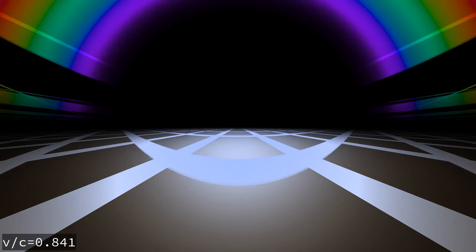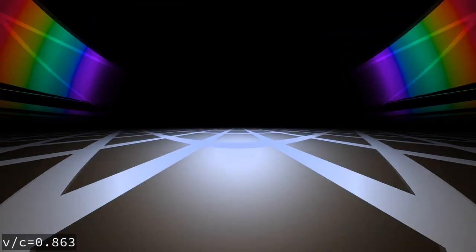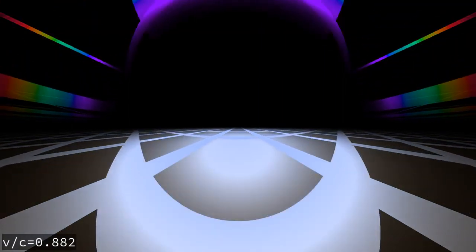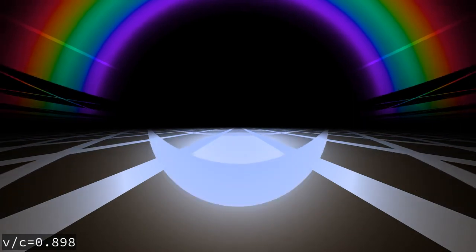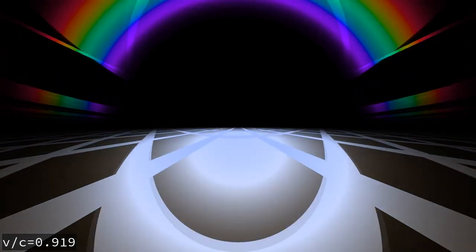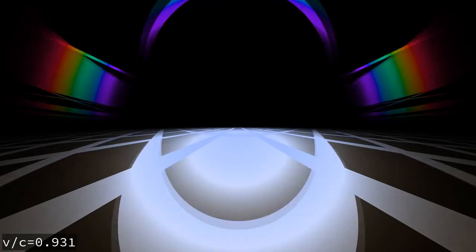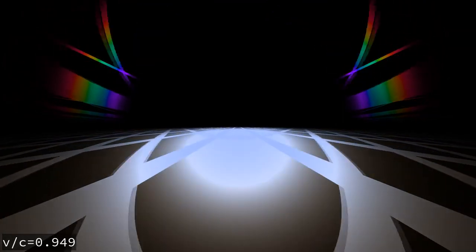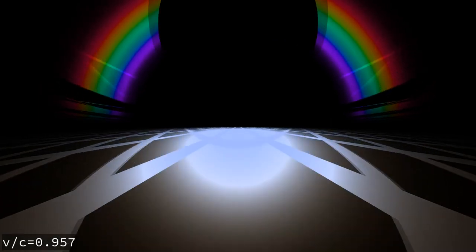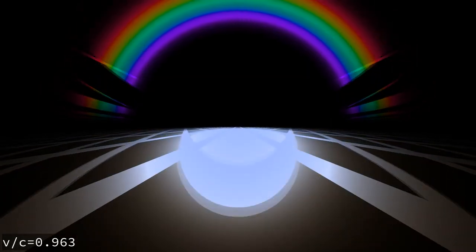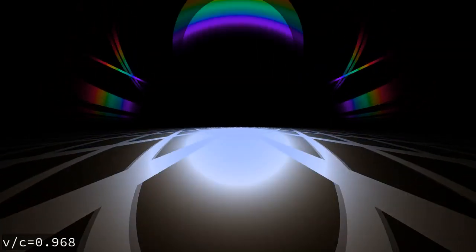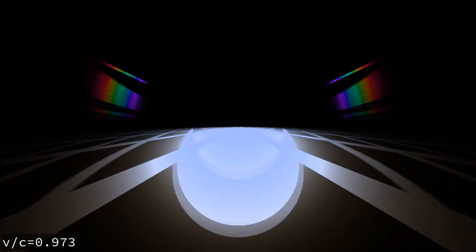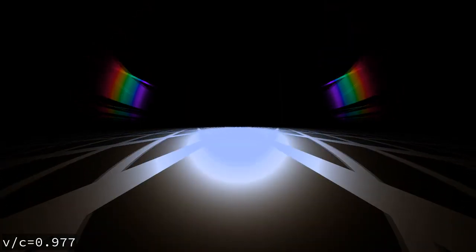As light takes longer to get to us, it shifts in frequency towards the red end of the scale. Now you're familiar with the spectrum of the rainbow. There's red on one end and violet on the other. These are not just colors, they're frequencies of light and it's based on how fast the wavelength moves in that light. As light takes longer to get to us, it shifts in frequency towards the red end of the scale.